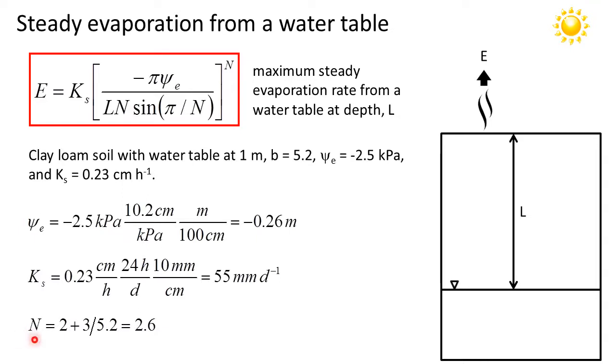Finally, I need to calculate the exponent N, which is just simply 2 plus 3 divided by 5.2, which evaluates to 2.6.